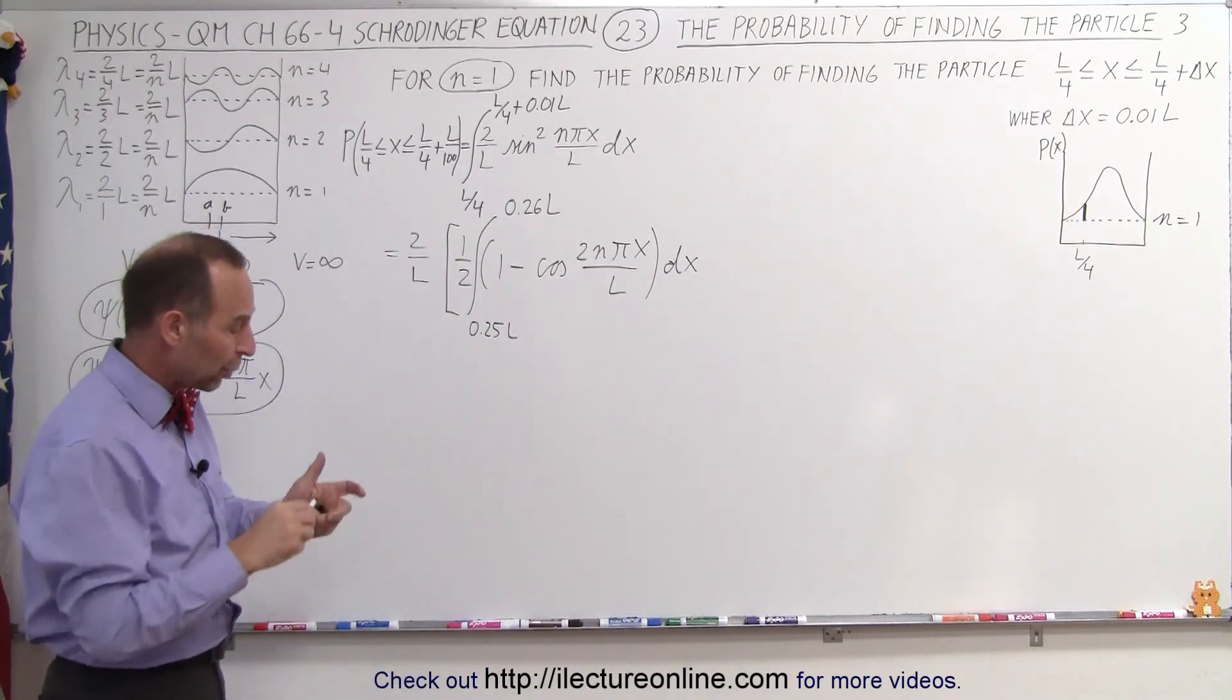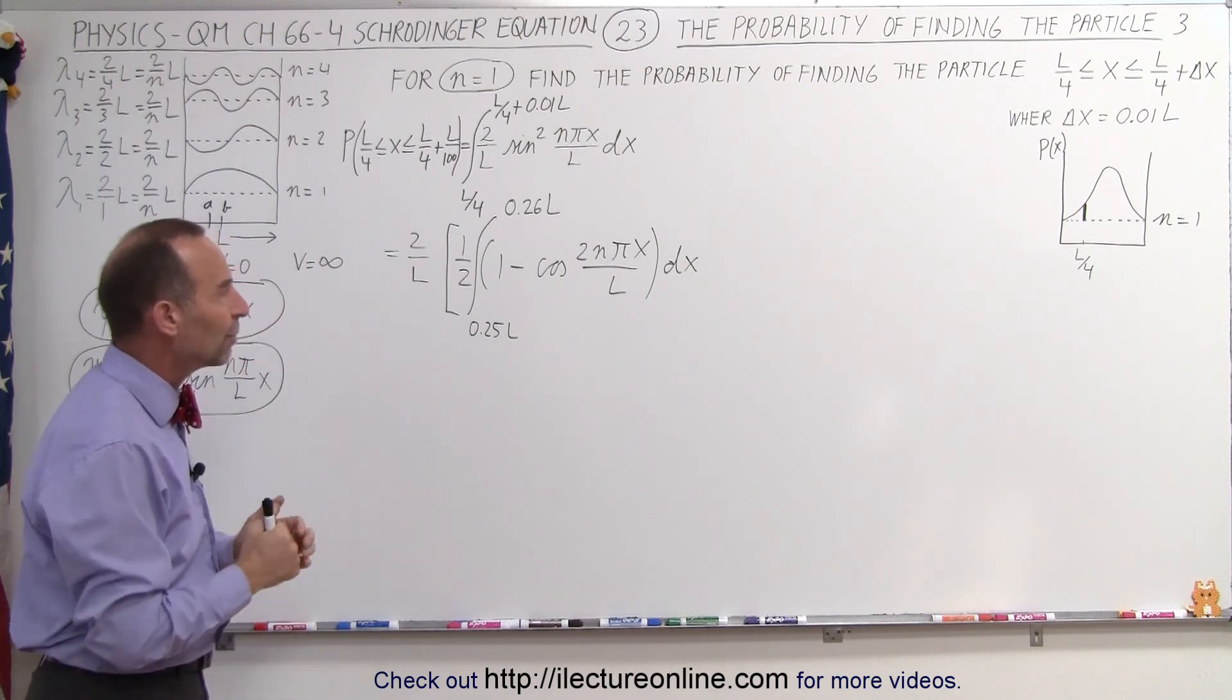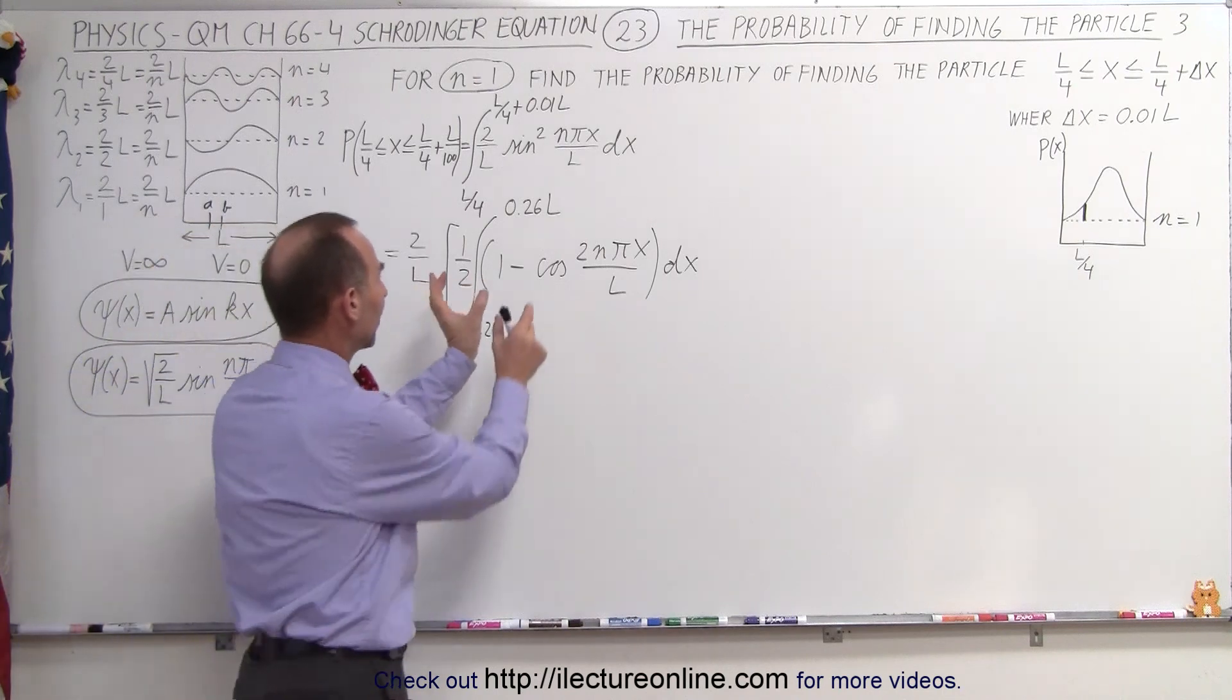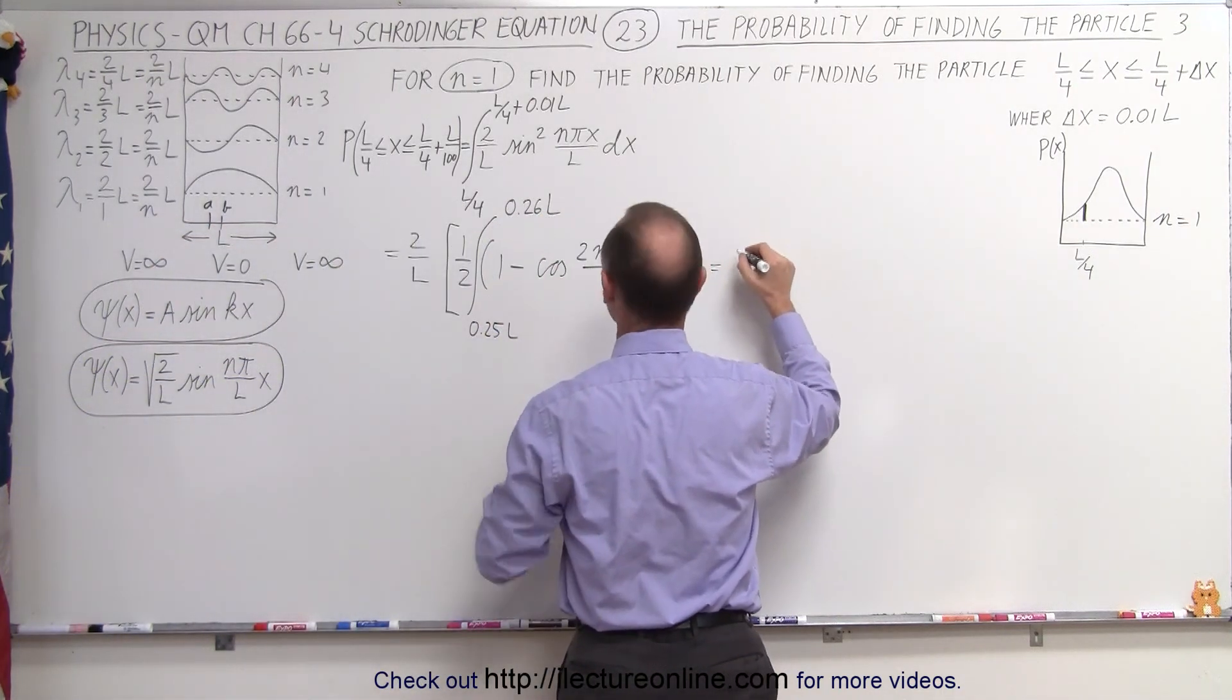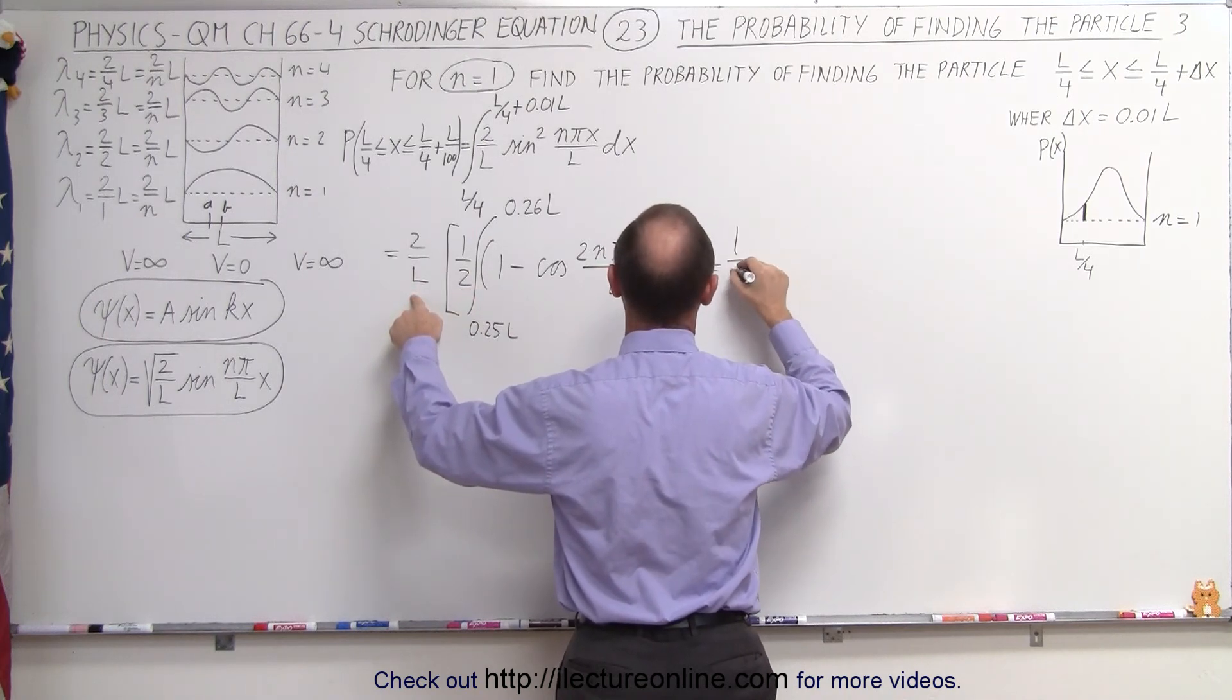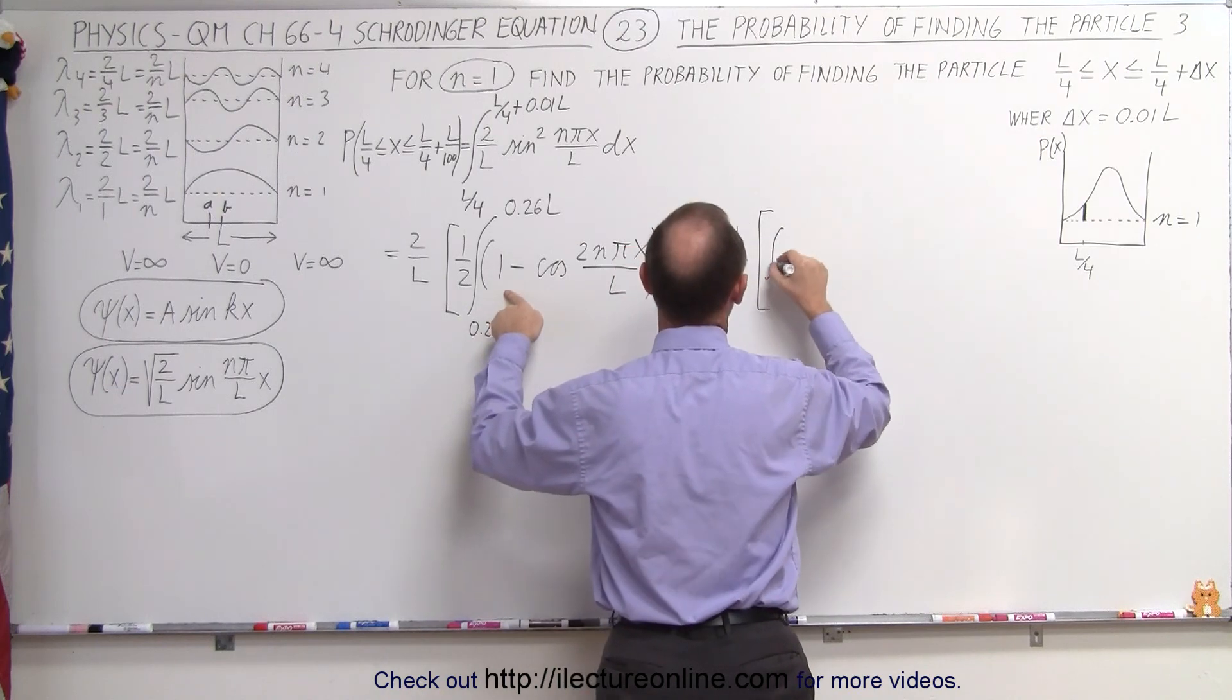Notice in the next video, we're going to show you a shortcut method to find that same result or approximate that same result. So first of all here, we can separate this into 2 separate integrals. So this would be equal to, multiply this times that, we get 1 over L times the first integral, which is simply going to be dx, from 0.25L to 0.26L.